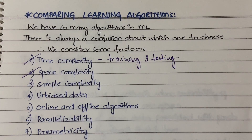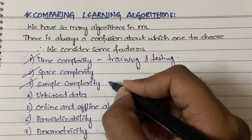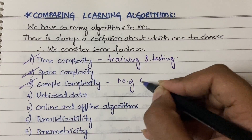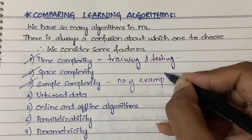Sample complexity refers to the number of training examples needed to train the machine. A machine should be able to learn perfectly with the minimum number of training examples possible, so that time will be saved, space will be saved — everything will be saved.